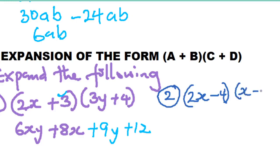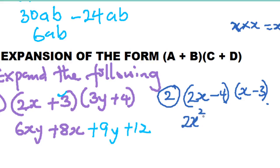Example two: we have (2x − 4)(x − 3). There's nothing in between, so we take 2x − 4 and multiply by x − 3. The first term goes first, then the second term. So 2x times x: x times x gives x squared, so 2x times x gives 2x squared. Then 2x times minus 3 gives minus 6x.